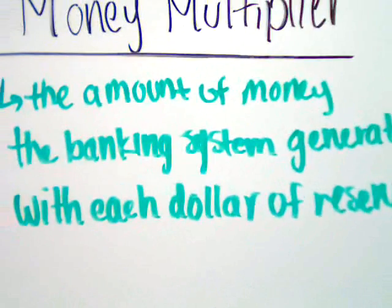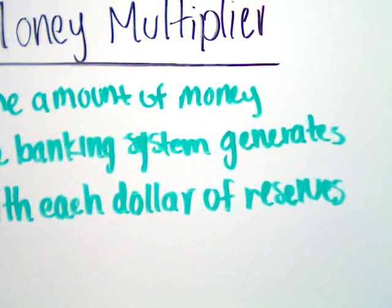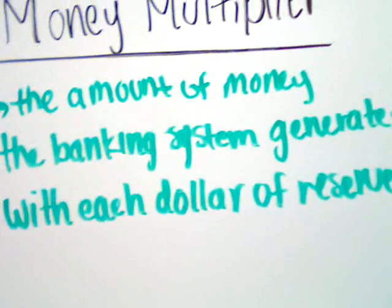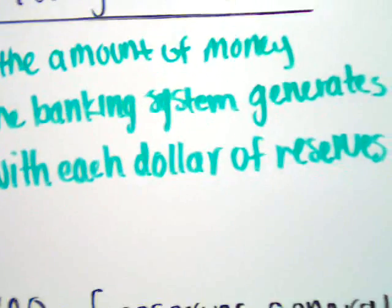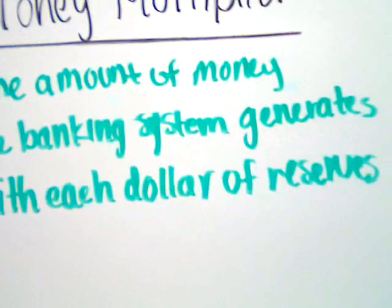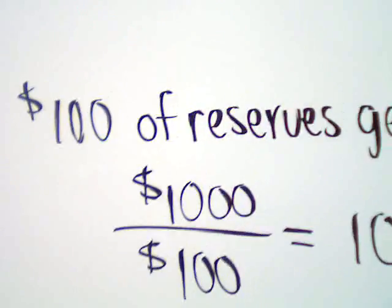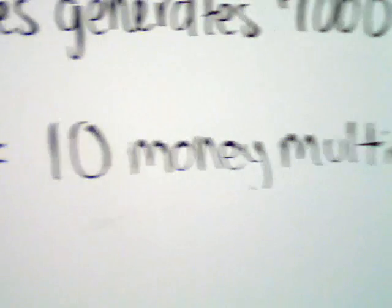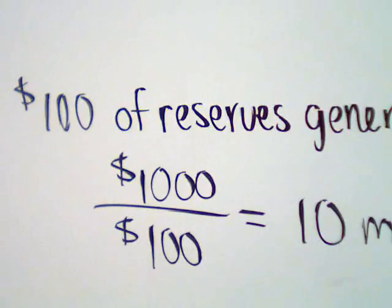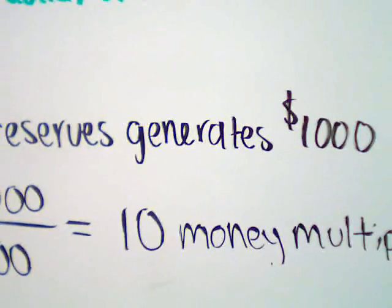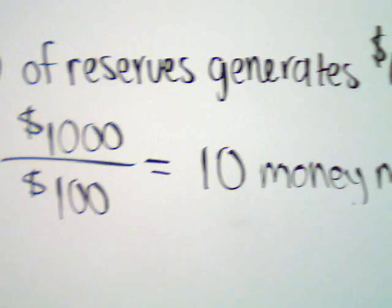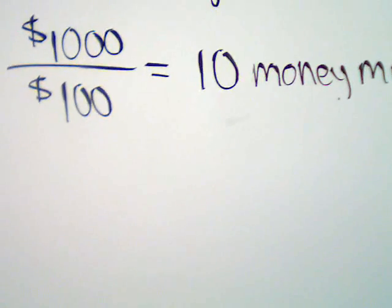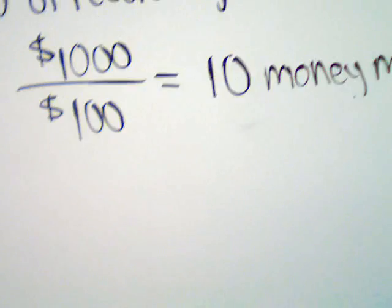In order to find the money multiplier — which is the amount of money the banking system generates with each dollar of reserve — for the $100 deposited, they were able to generate $1,000. To find the money multiplier, you take the $1,000 that was generated, divide it by the original $100, and you get 10. So $100 of reserves generated $1,000, and dividing the two gives you a money multiplier of 10. That's how you find the money multiplier.